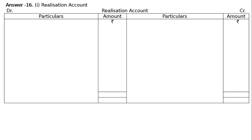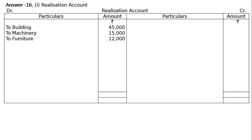First part will be preparing a realization account. Transfer all the assets to the debit side one by one: To Building Rs. 45,000; To Machinery Rs. 15,000; To Furniture Rs. 12,000; To Debtors Rs. 8,000; and To Stock Rs. 24,000.